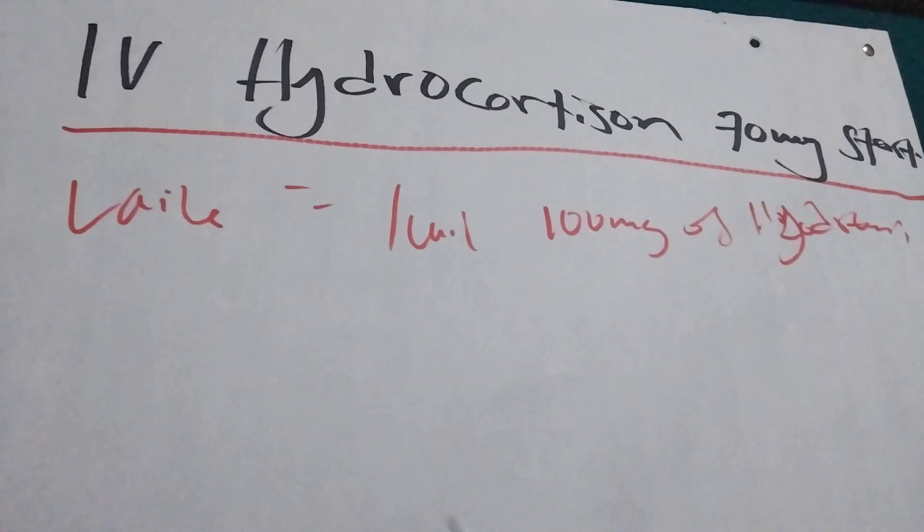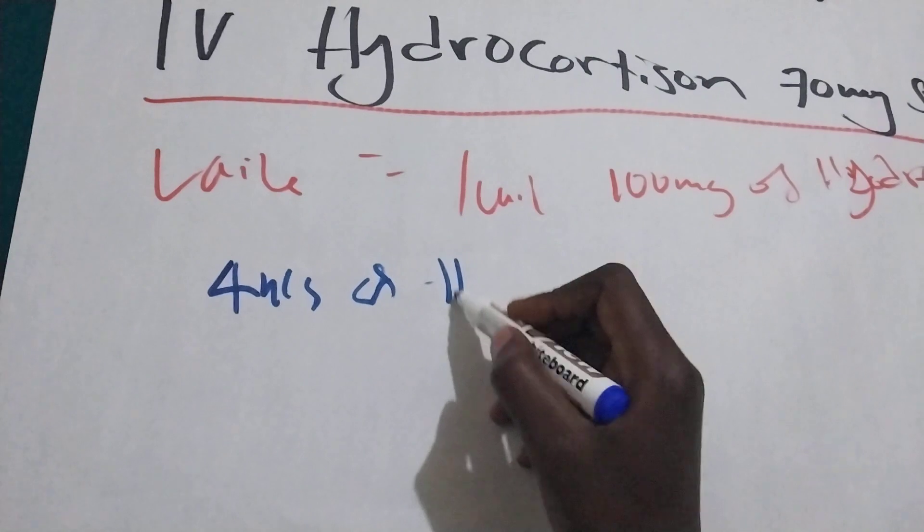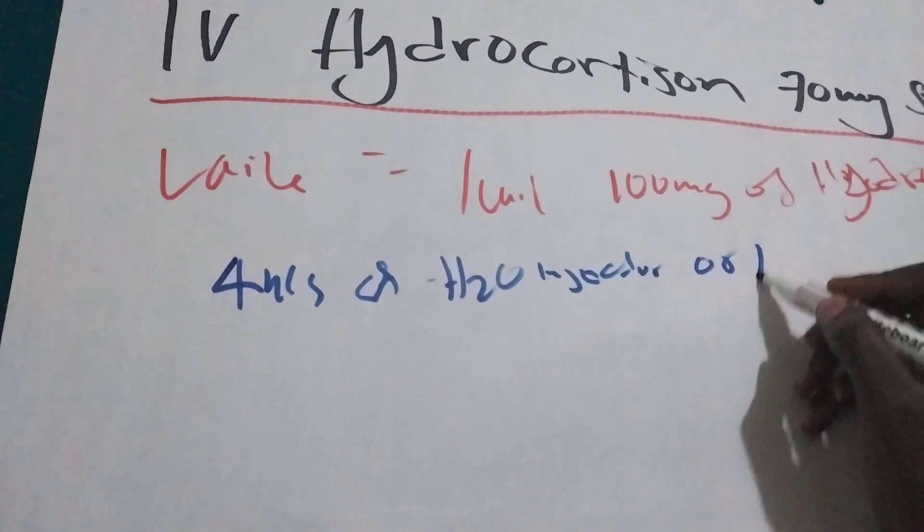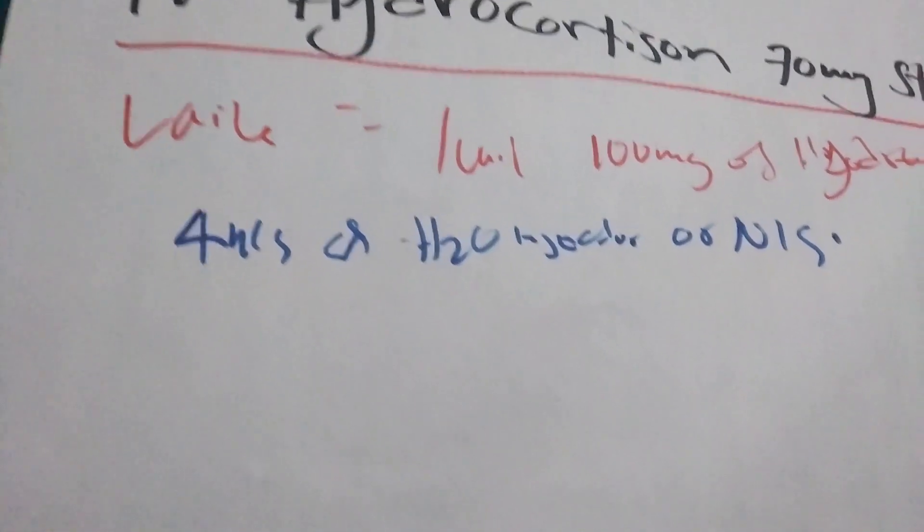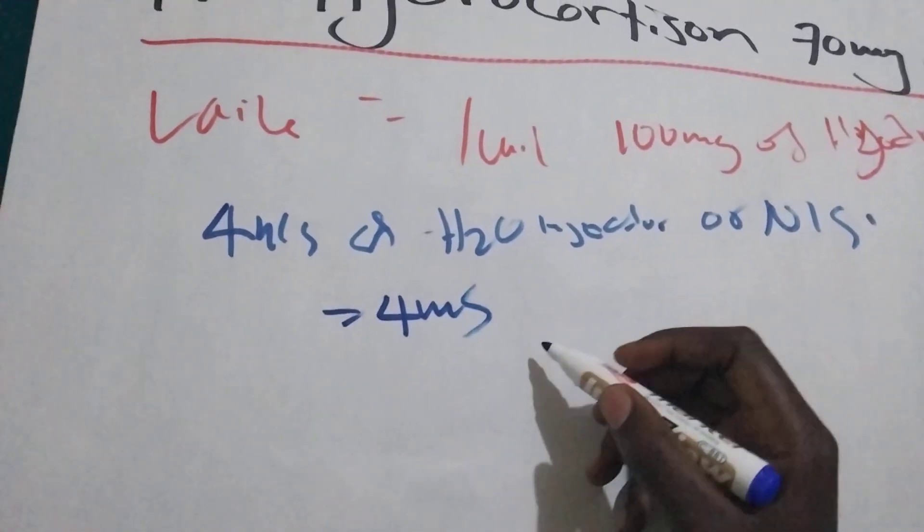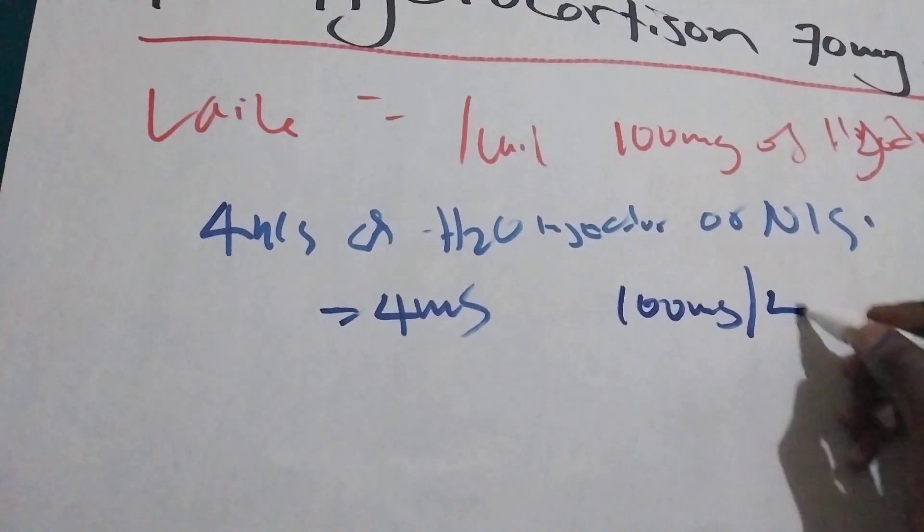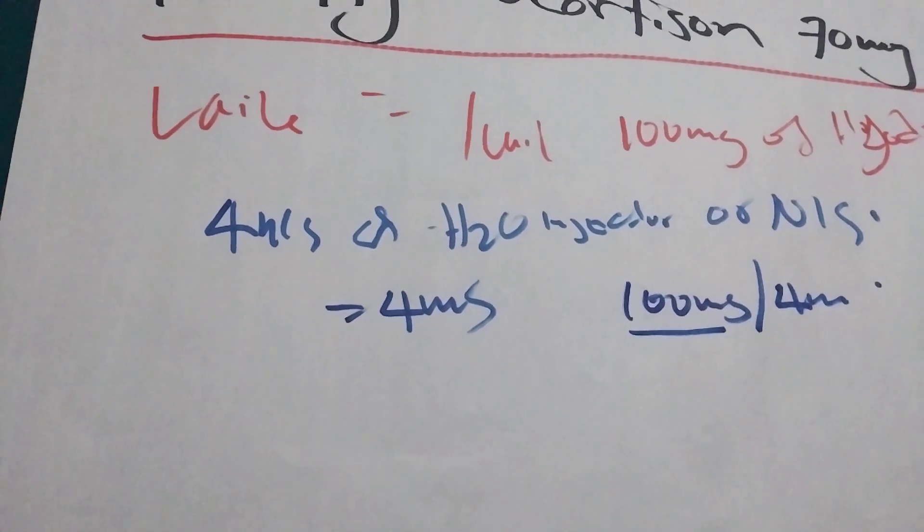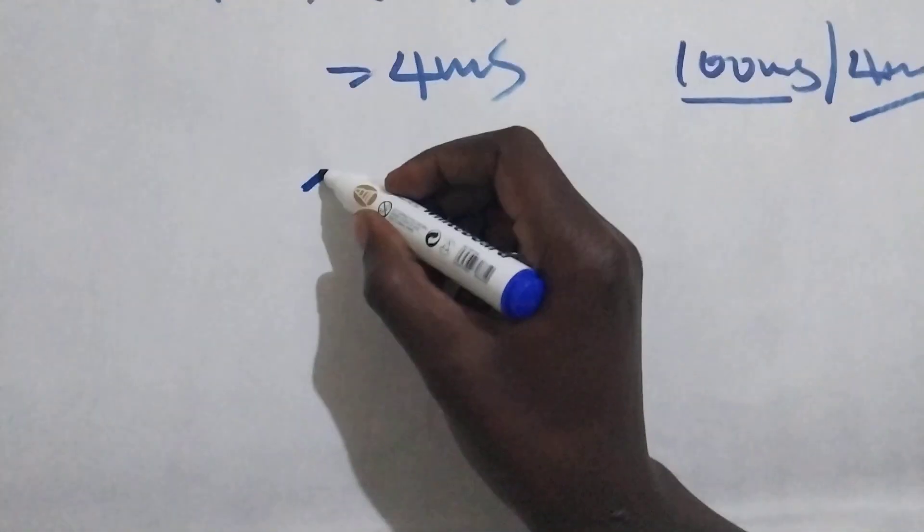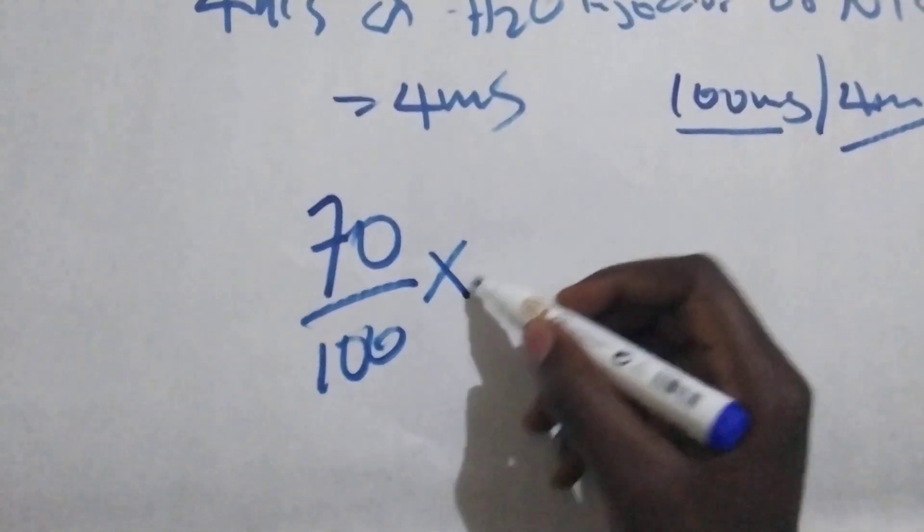For children we are going to use 4ml of water for injection or normal saline. Then our dilute will become 100mg in 4ml. So our base will become 100 and the dilution will become 4. So doctors prescribe 70, so the prescribed amount is 70 divided by 100 times 4.